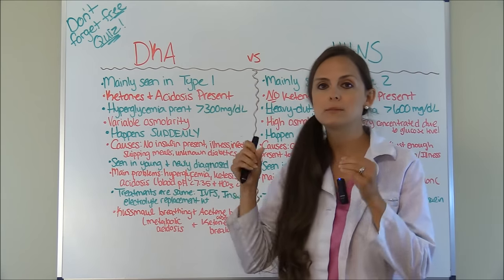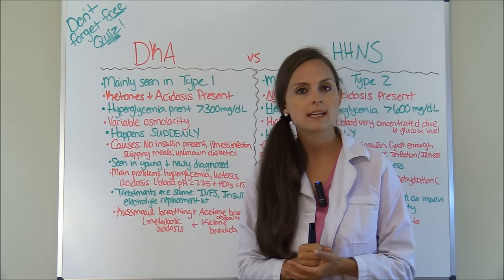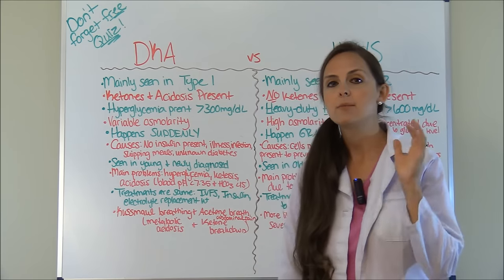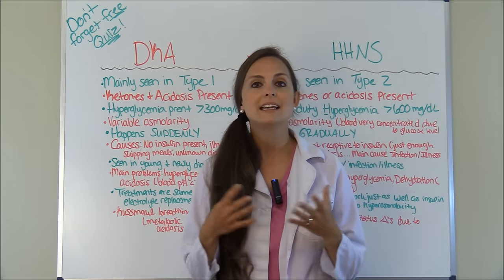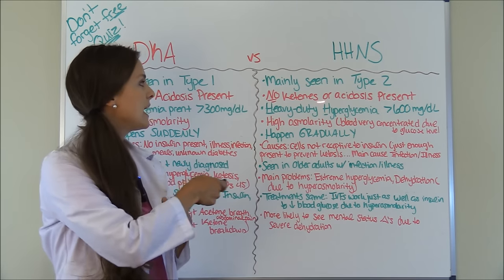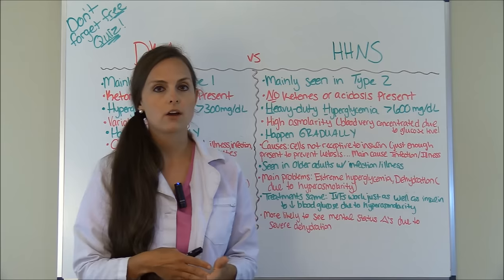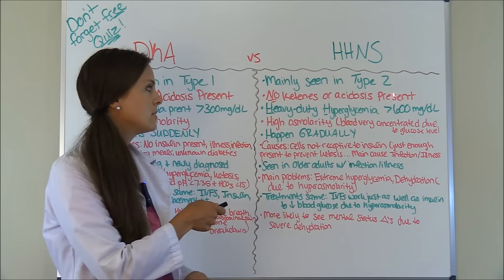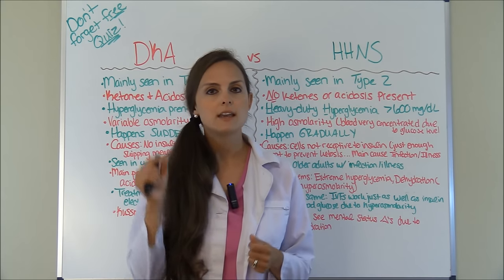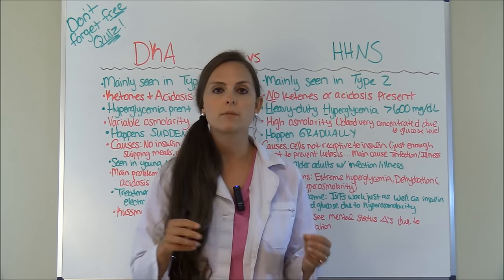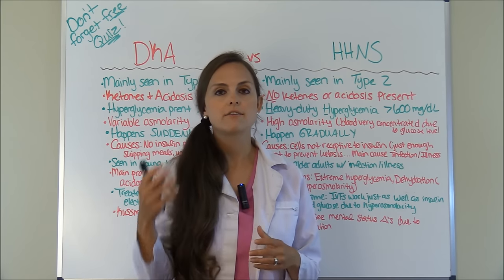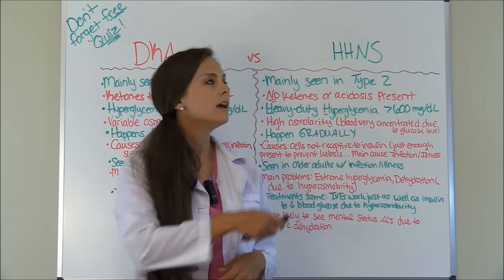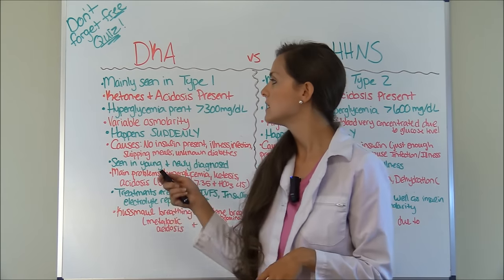Ketones and acidosis are present in DKA because the body breaks down fat when there is absolutely no insulin. The body needs fuel so it breaks down those fats — hence ketoacidosis. However, in HHNS there is absolutely no breakdown of ketones or acidosis. You won't see ketones in the urine and the patient won't have metabolic acidosis, because there is just enough insulin to prevent fat breakdown. The cells are just not receptive to insulin, but there is some insulin present — that's why it's mostly seen in type 2 diabetics.